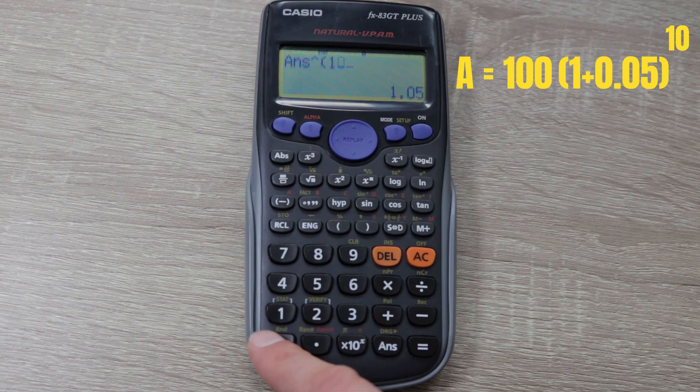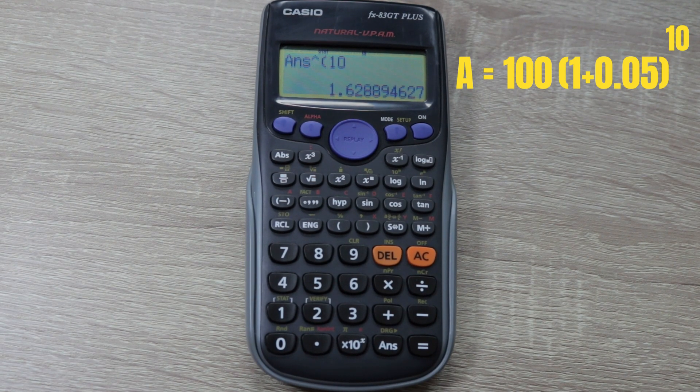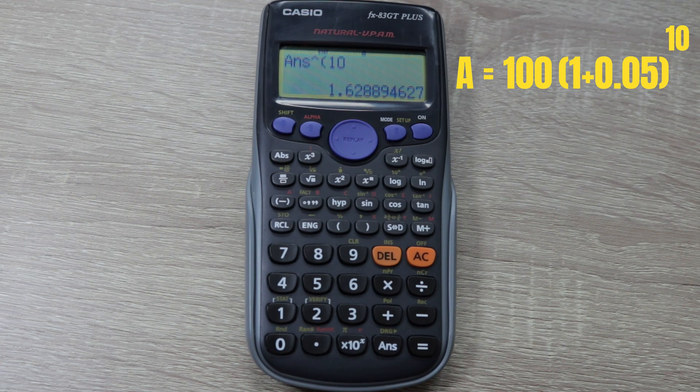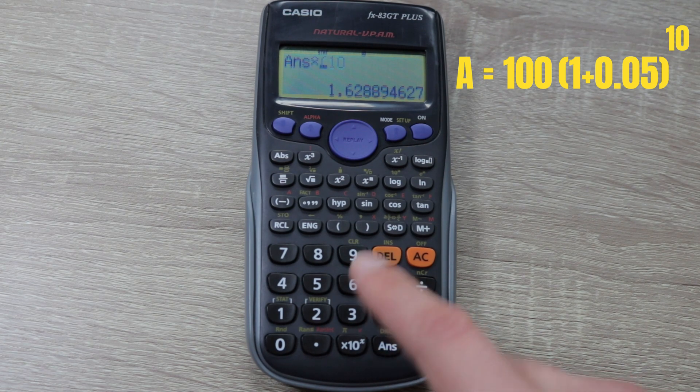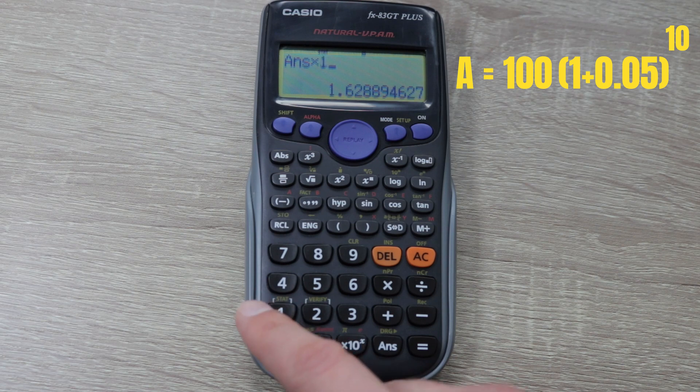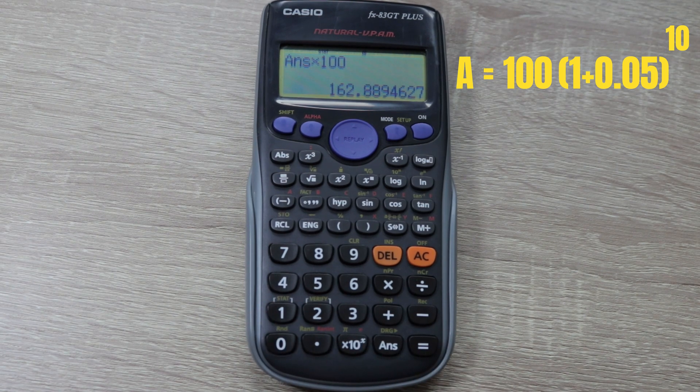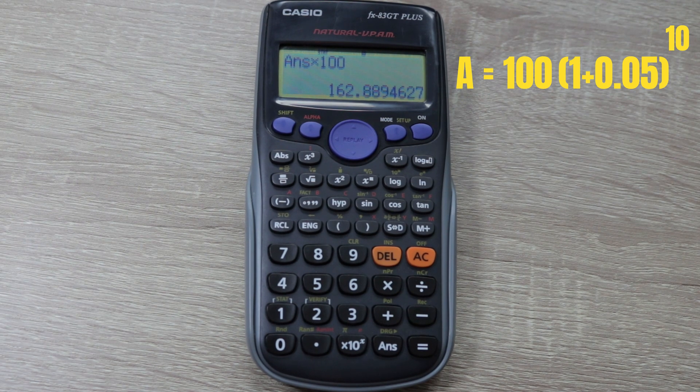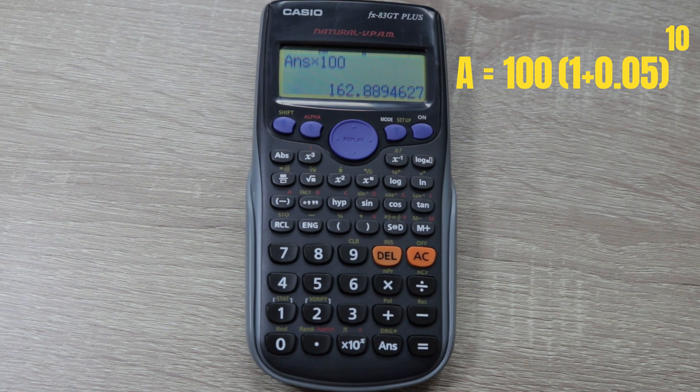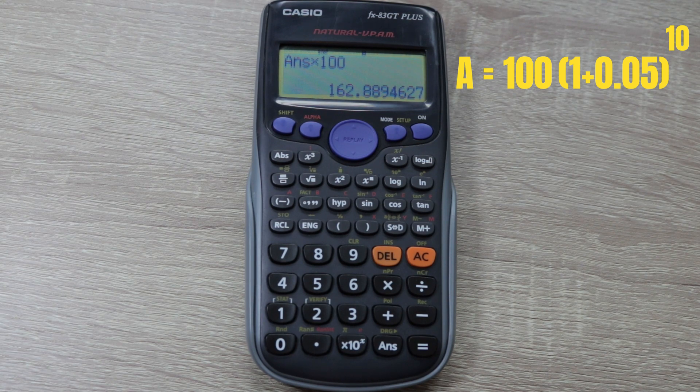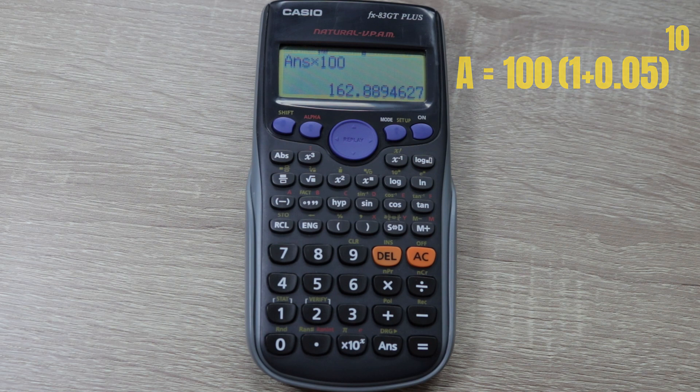To the power of 10 is 1.63, and we need to take that figure and times it by our present value to give us our future value. So in 10 years, £100 invested at 5% per year will be £162.89.